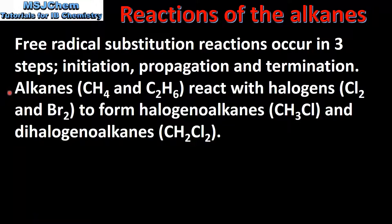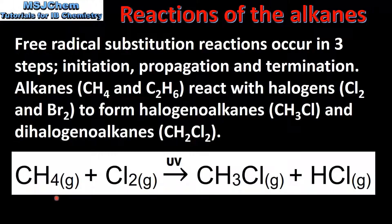Alkanes such as CH4 methane and C2H6 ethane react with halogens such as chlorine and bromine to form halogenoalkanes and dihalogenoalkanes. In this video we will look at the initiation, propagation and termination steps in the reaction of methane with chlorine to produce chloromethane and hydrogen chloride.